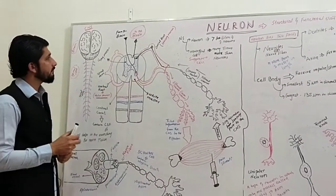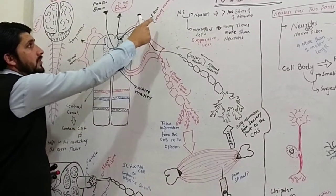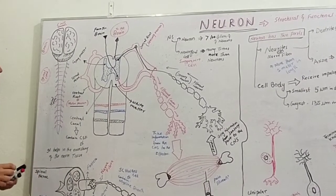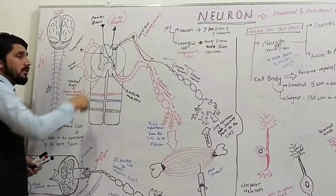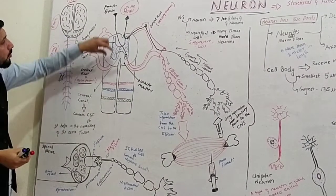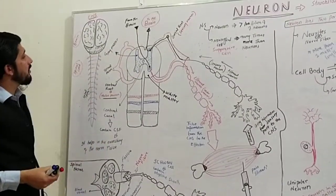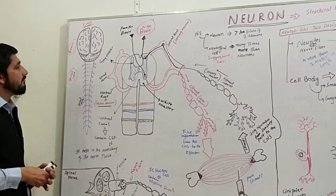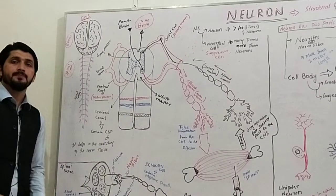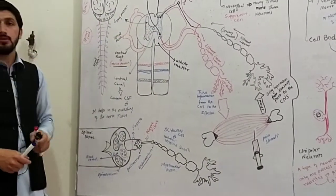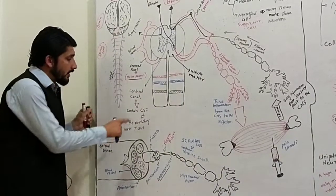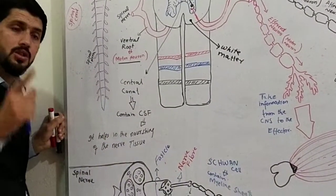The dorsal root contains sensory neurons, and the ventral root contains motor neurons. Within the spinal cord there are dorsal horns and ventral horns, called gray matter and white matter. The central canal is present in the middle and contains cerebrospinal fluid, which helps in nourishing the nerve tissue.